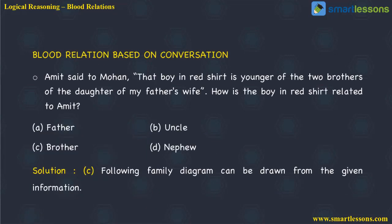Let's look at an example. The question goes: Amit said to Mohan that a boy in the red shirt is the younger of the two brothers of the daughter of my father's wife. How is the boy in the red shirt related to Amit? Options: A) Father, B) Uncle, C) Brother, D) Nephew. If we draw the family hierarchy and proceed step by step, we will be able to decipher it very easily.